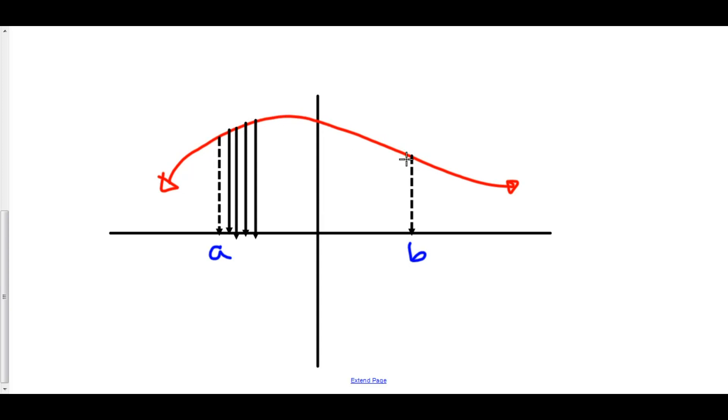So you sum all of them up and then divide by how many there are, which is b minus a. Just that distance right there. It is exactly the same thing as what you did in Algebra 2 when you found the average of a list of numbers. There is no difference.